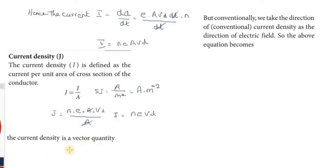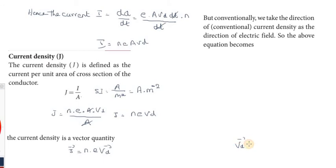J is a scalar quantity. The vector form is: j vector equals n into e into vd vector. Now, the value of drift velocity is: vd equals minus e into tau divided by m, into electric field E vector.